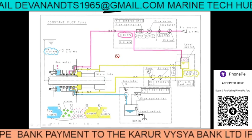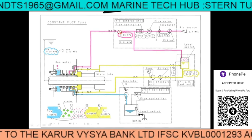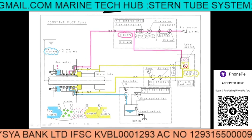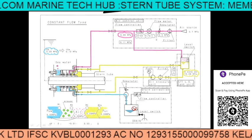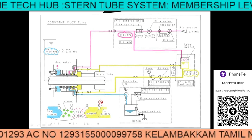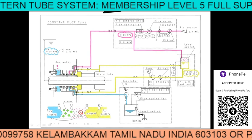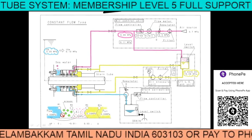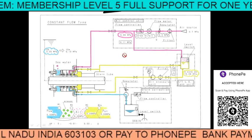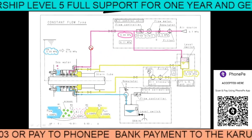Right now this is the latest air supply constant flow type, where we keep air supply continuously. We have drain tanks here to collect either seawater or lube oil if it is leaking. This is the air supply continuously — these are the seals 1 and 2. This is the latest arrangement. If you have any doubt regarding this, you can always message me.